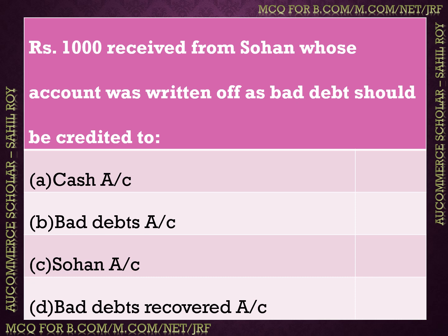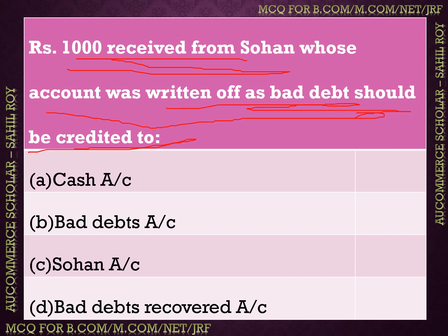Next question: rupees 1000 received from Sohan — which account was written off as bad debt? The amount should be credited to the bad debts recovered account, and rupees 1000 will be credited to the bad debts recovered account.